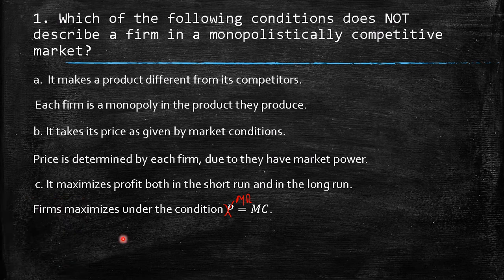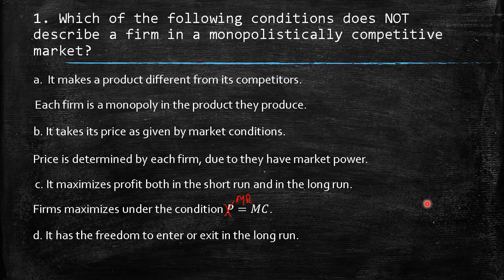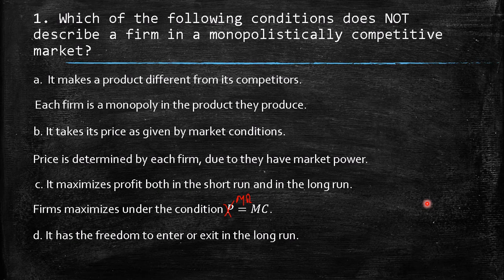Option D says it has the freedom to enter or exit in the long run. That's also correct — there are no barriers to entry in monopolistic competition, unlike monopoly or oligopoly markets where barriers exist. Firms can exit or enter the market freely, so the answer remains B.